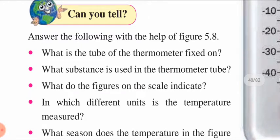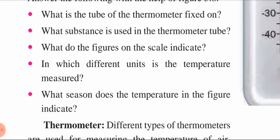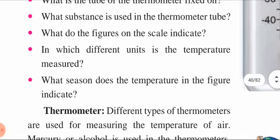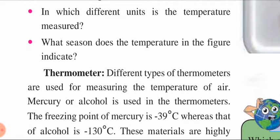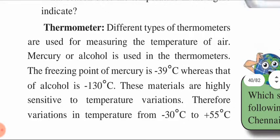Now we will look at the thermometer: what the tube is fixed on, what substance is used in the thermometer tube, what the figures on the scale indicate, in which units temperature is measured, and what season the temperature in the figure indicates. We have studied isotherms — lines drawn on a map joining places of equal temperature. The isotherms in the southern hemisphere are fairly parallel to latitudes, while in the northern hemisphere the isotherms vary, leading to the curved nature of these lines. What is a thermometer? Different types of thermometers are used for measuring the temperature of the air, as well as when you are sick and have fever to check body temperature.